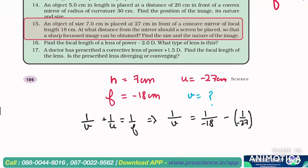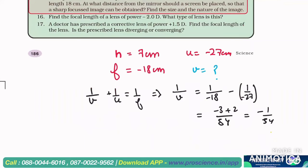This is equal to, LCM will be 54, and this is 3 plus 2, that is minus 1 by 54 cm. So v will come out to be minus 54 cm.